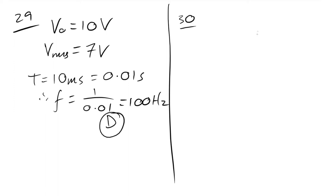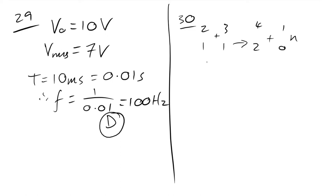Question 30: deuterium plus tritium fusion. Checking the nucleon and proton numbers: the atomic number goes from 1+1=2 to 2, so X has atomic number 0. The mass numbers must balance, giving X a mass of 1. With Z=0 and A=1, X must be a neutron.